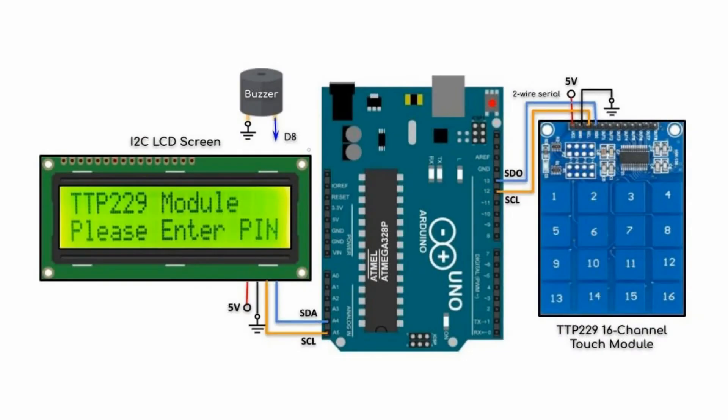This is a quick video that presents some software modifications to the personal identification number project demonstrated in my previous video using the TTP229 module.